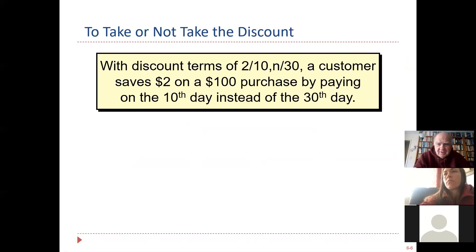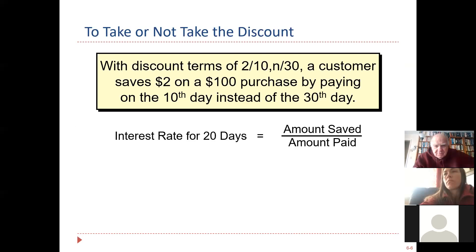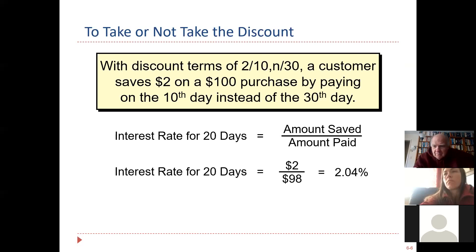With discount terms of 2/10, a customer saves $2 by paying in just 10 days. So that means this person gave up the money for 20 days. They had a choice of paying in 10 or 30 days. They saved $2. That means they had actually 2 over 98, which is 2.04%. So that means they earned 2% in just 20 days.